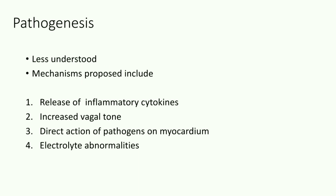What is the pathogenesis of this sign? The pathogenesis is less understood. The mechanisms proposed include: 1) the release of inflammatory cytokines which alter the autonomic balance in the human body, 2) increased vagal tone, 3) direct action of pathogens on the myocardium, and 4) electrolyte abnormalities.